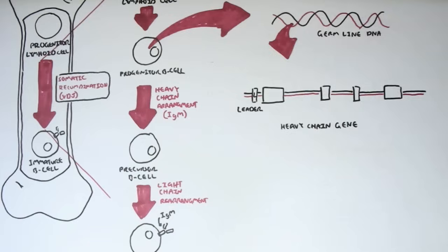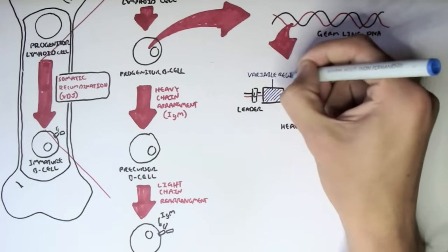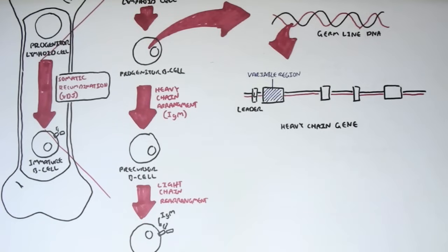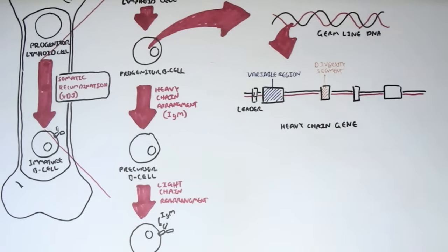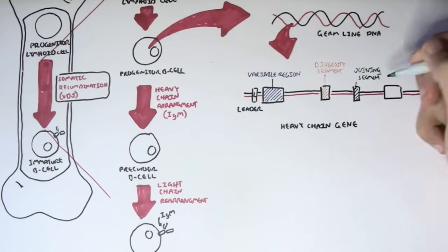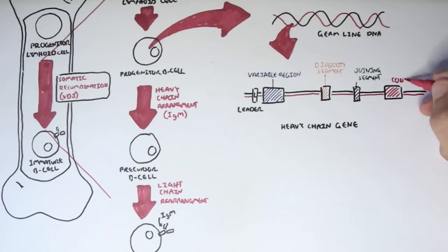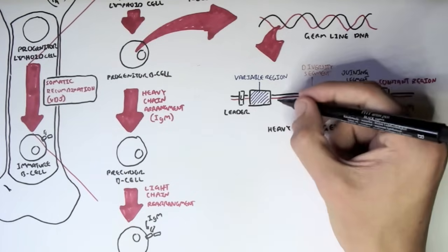So in the heavy chain gene, we have a leader segment, we have a V segment known as the variable region, and we have the D segment, the diversity segment, we have the J segment, the joining segment, and we have the constant region. On the heavy chain gene, the constant region is known as constant mu, which will essentially make the antibody for immunoglobulin M.